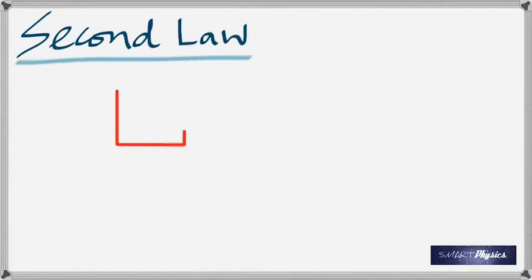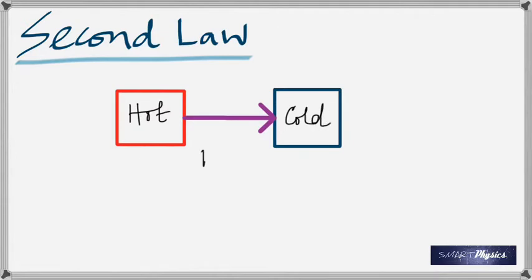This is chapter 20, thermodynamics. It starts with the second law of thermodynamics. According to this law, if you have a hot object and a cold object, heat will flow spontaneously from the hot to the cold. You've got to do nothing. It'll just flow on its own from the hot to the cold. That is the second law of thermodynamics.